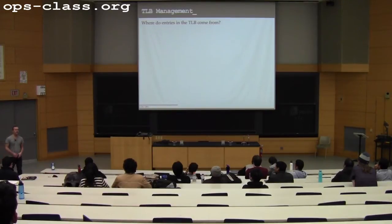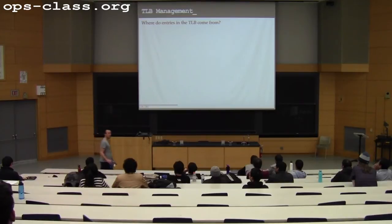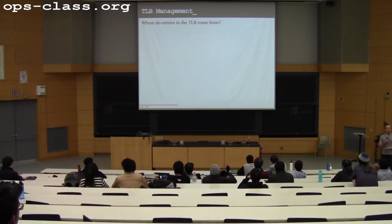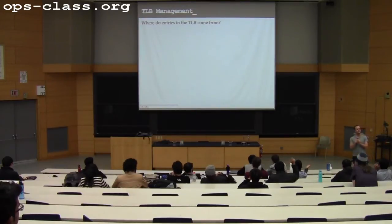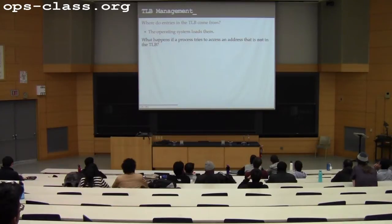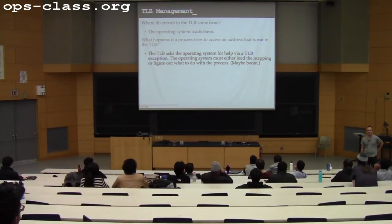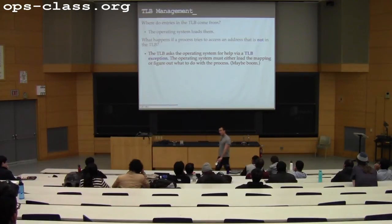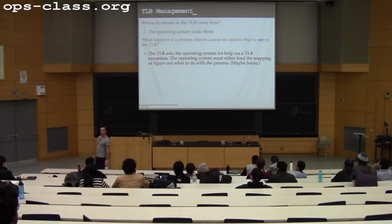The TLB allows most memory addresses to be translated without involving the kernel. TLB entries are put there by the OS. When a process tries to access something not in the TLB, it generates an exception the OS handles. The OS either tells the TLB how to translate the address, signals an error if the address is not translatable, or today we'll discuss a third case: the OS may have to do work to make that virtual address translatable.